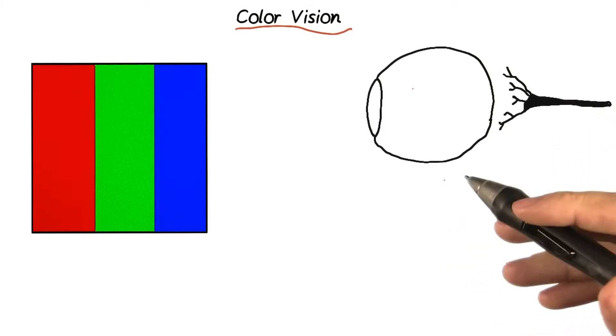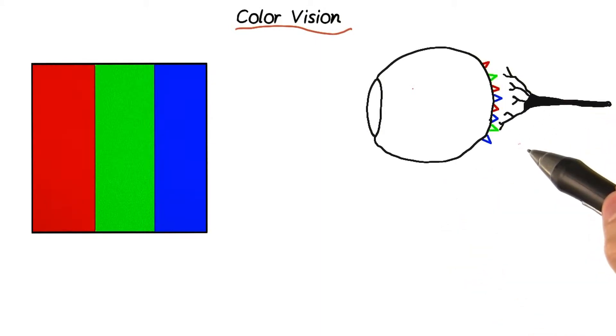Now the actual sensors in the eye are three types of cone cells. And each of these types of cone cells collects photons of a particular range of wavelengths.